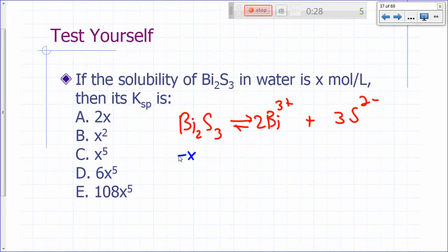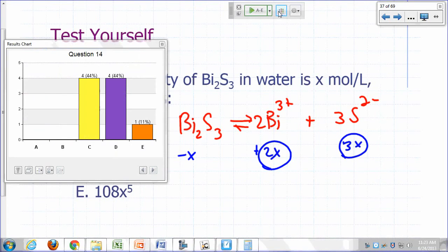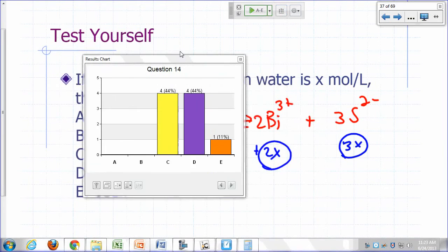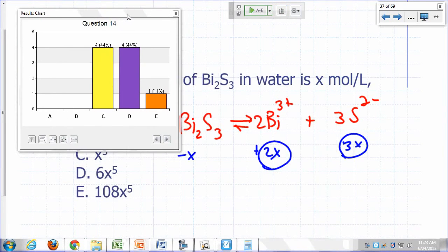I'm just trying to figure it out. So I'm going to lose X moles per liter of that. So I'm going to make 2X moles per liter of this. And how much of this will I make? 3X moles per liter. So at equilibrium, I'll have 2X of this and 3X of that. C and D are popular choices.